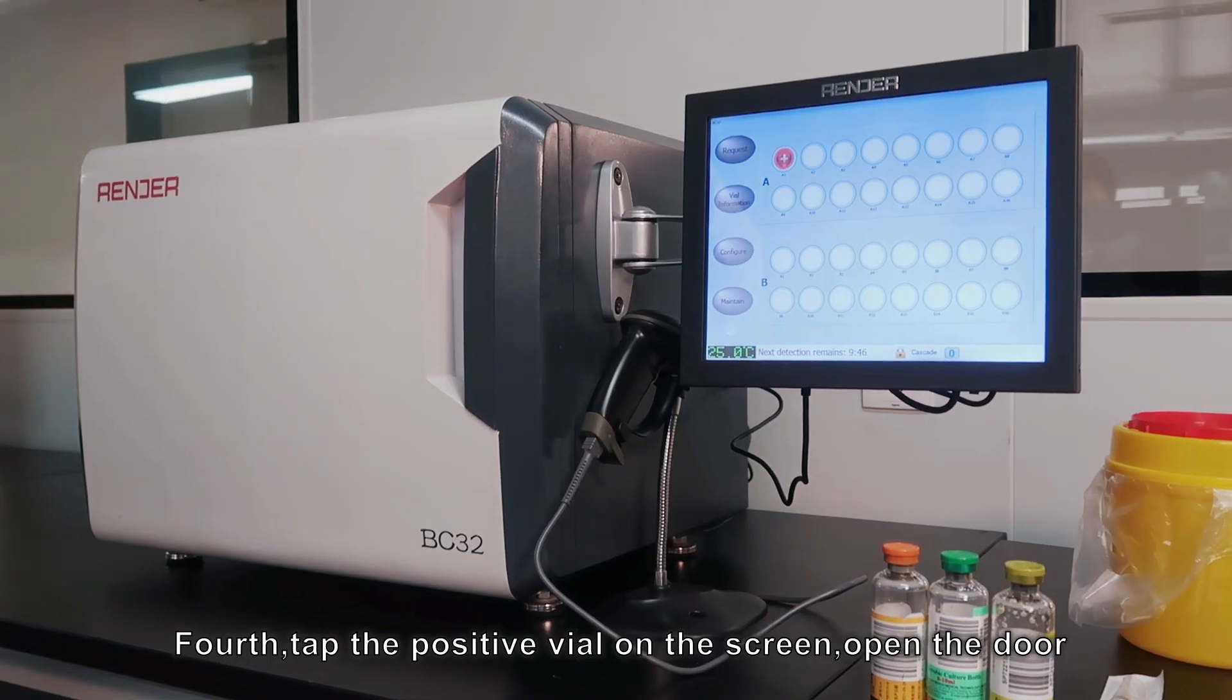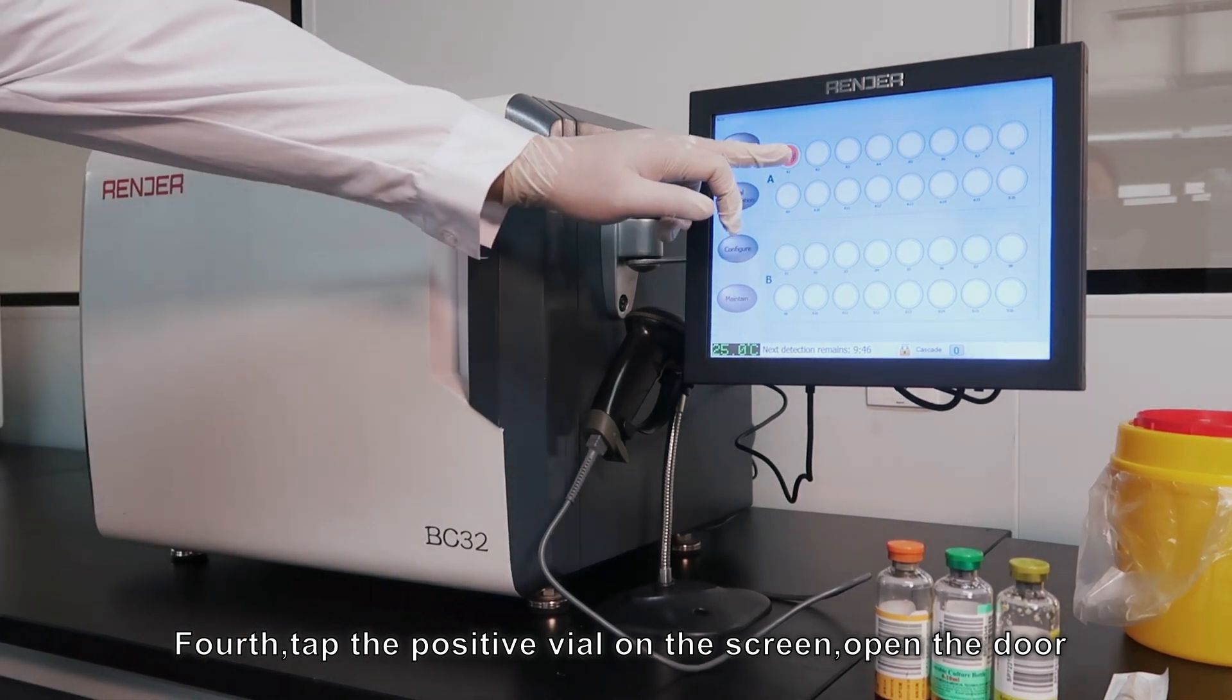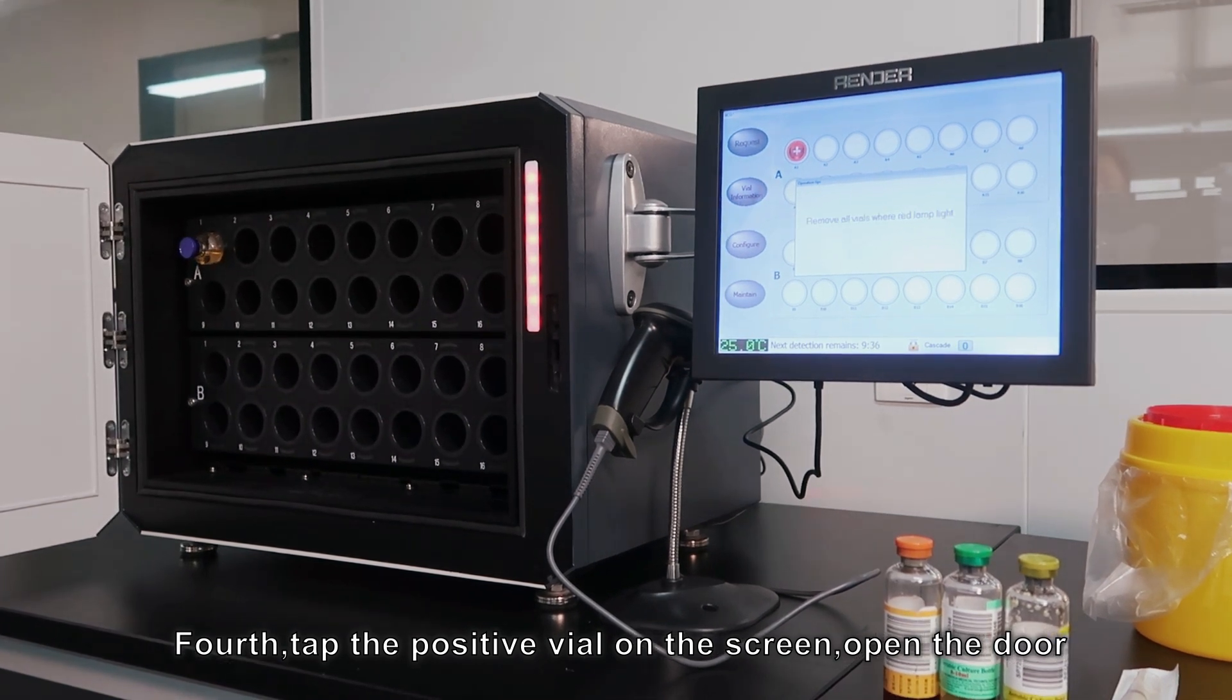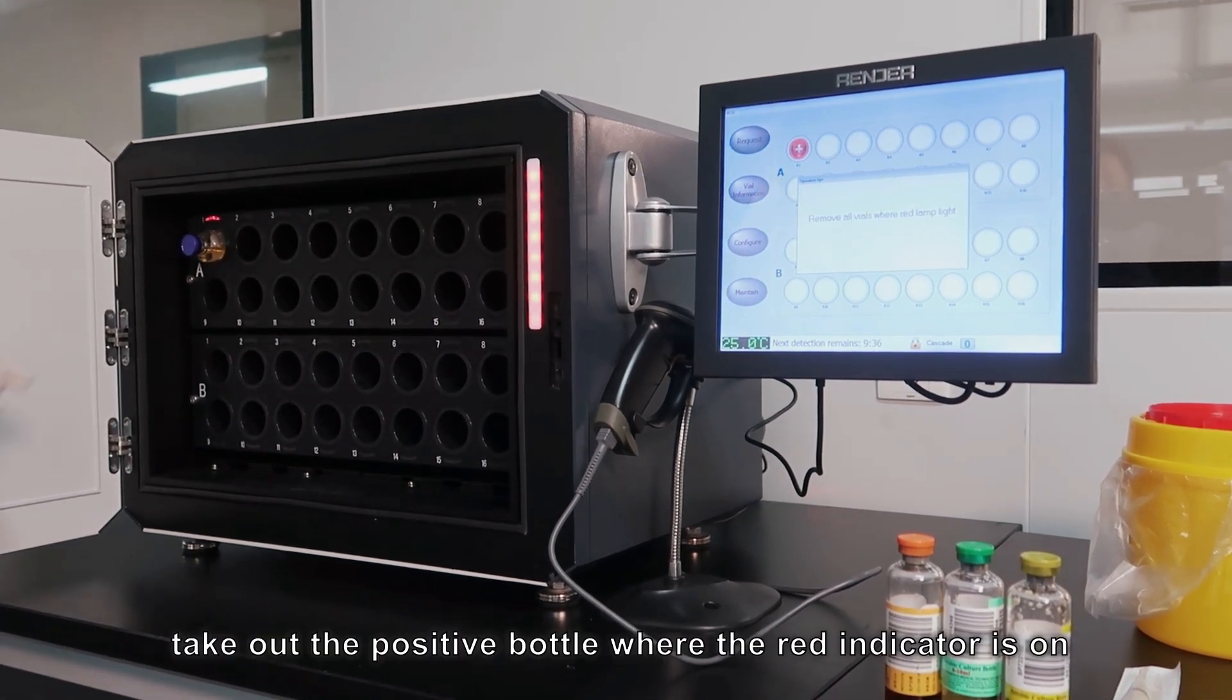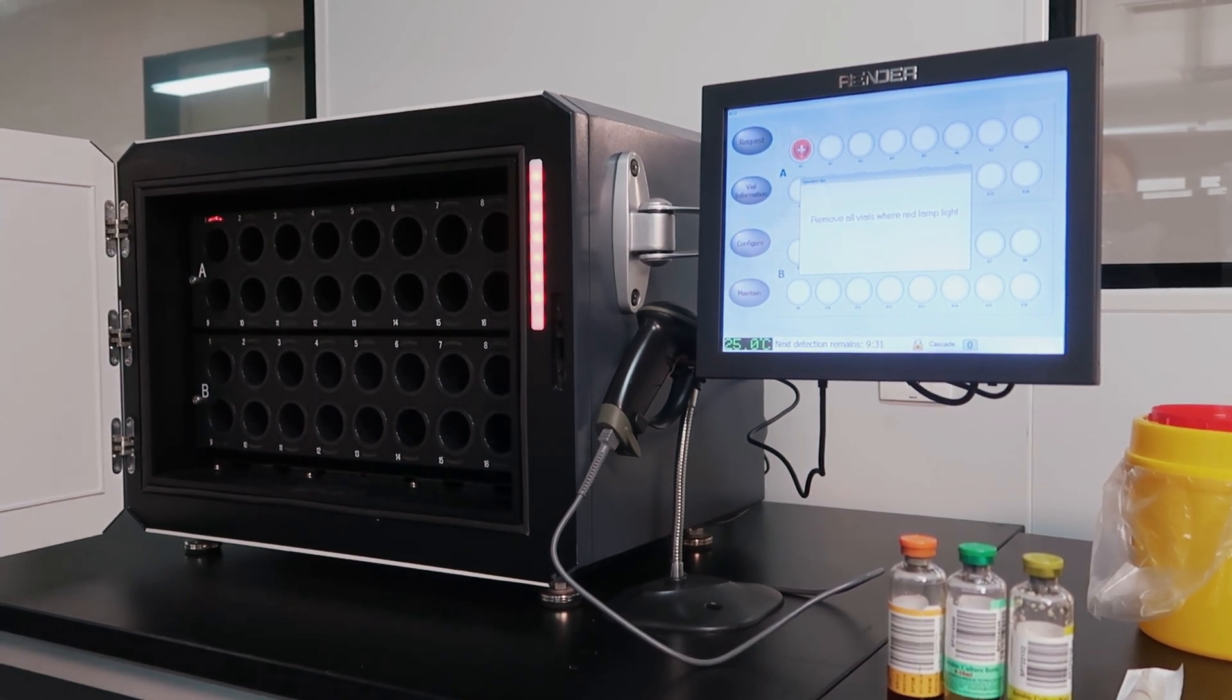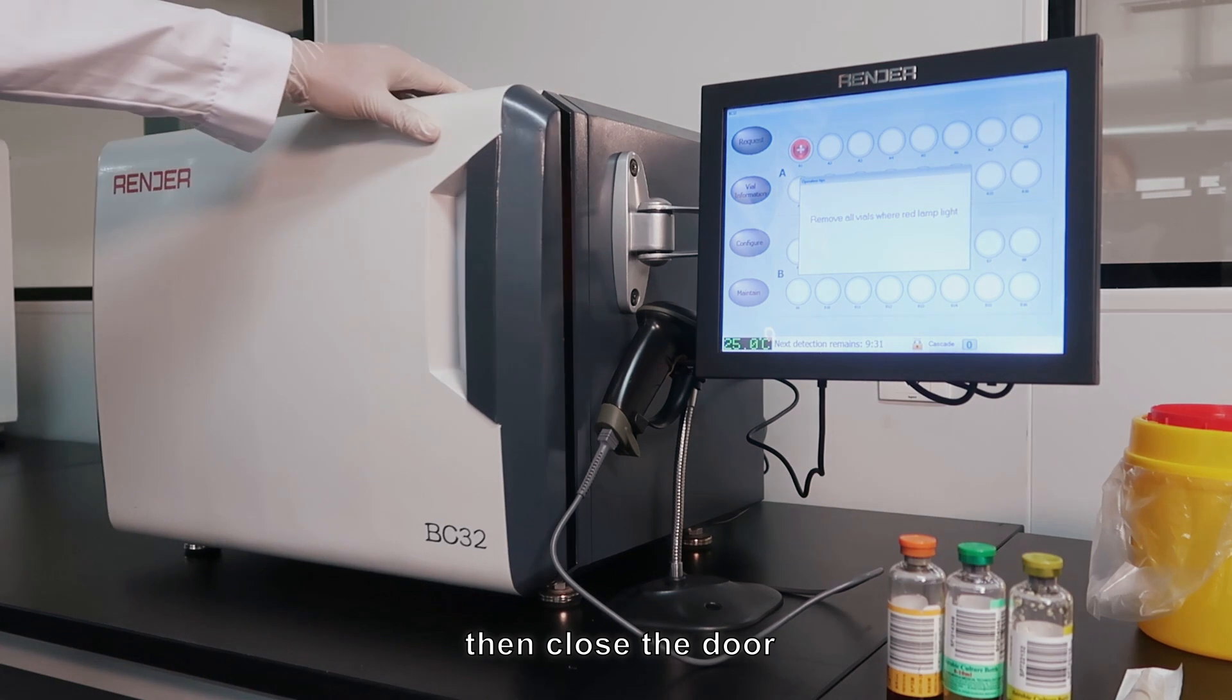Fourth, take out the positive bottle. Click the positive bottle indicator on the screen. Open the door. Take out the positive bottle where the red indicator is on. Then close the door.